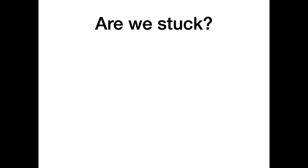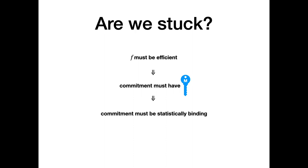At this point, it seems like we're stuck. The requirement for the function f to be efficient seems to imply the commitment must have a trapdoor master key, which forces statistical binding, which in turn forces computational hiding — dashing all hopes of statistical WI. It seems these techniques might be inherently limited to proving computational WI.